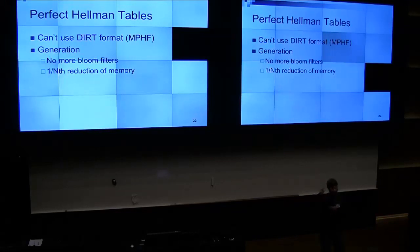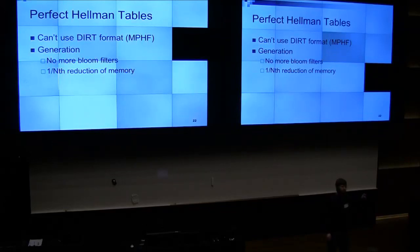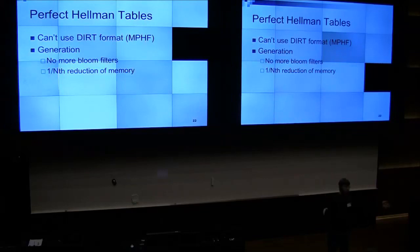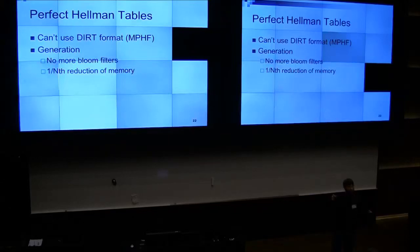What this would do: you have this Hellman table, and as you generate chains, you insert those passwords into this bloom filter, and every time you generate another one, you look up in the bloom filter to see if it's already in the table. If it is, then you just throw away the chain.